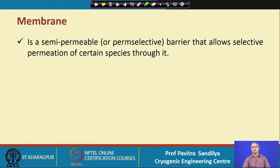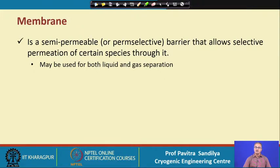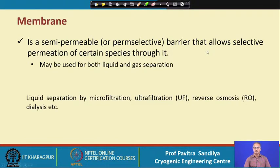Perm-selective comes from two words — permeation plus selective — meaning a membrane allows some components to pass through it and does not allow others, and that is how it effects separation. This membrane separation is used for both liquid and gas separation. At the household level, membranes are used in water purification — processes like microfiltration, ultrafiltration, and reverse osmosis — but we shall focus only on gas separation.